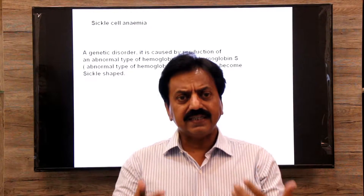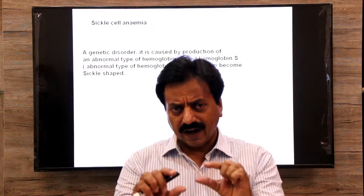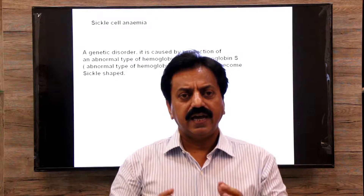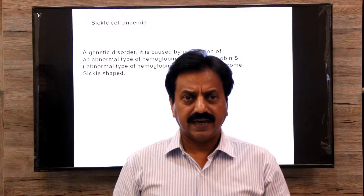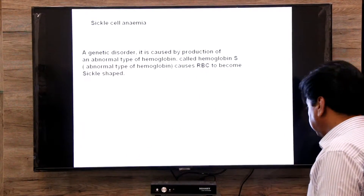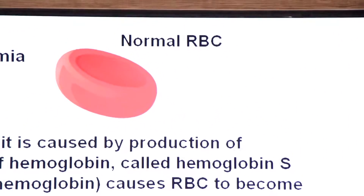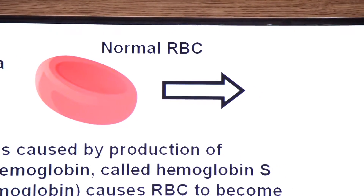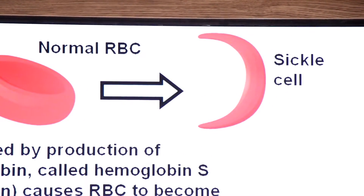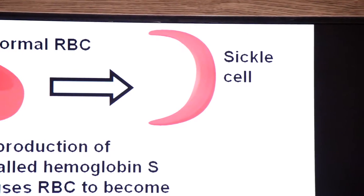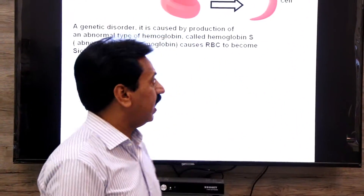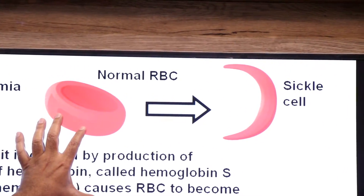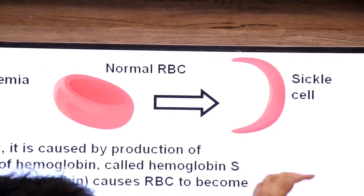These are normal RBCs — disc shaped. In sickle cell anemia, that normal disc shape becomes sickle shaped due to the abnormal hemoglobin. So the RBCs' shape becomes abnormal; instead of the normal disc shape, they become sickle shaped.